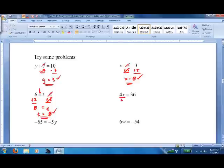Divide by 4 both sides. Cancel. Cancel. X equals 9 over 1. X equals 9. 4 times 9 is 36. Checks.